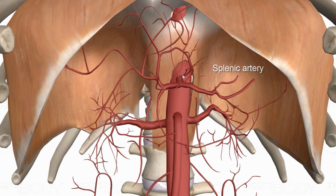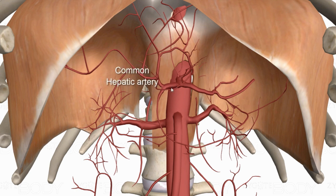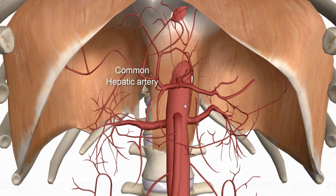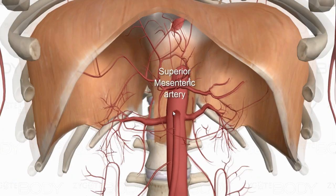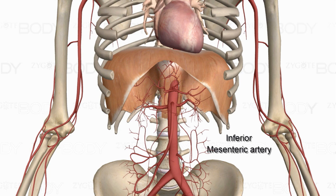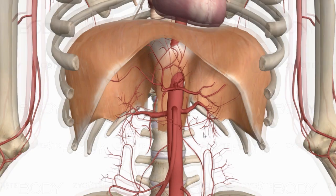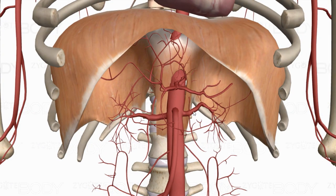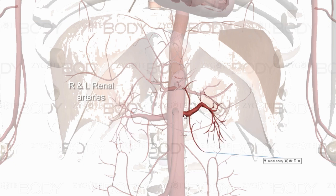A branch going up to the stomach is the left gastric artery. The branch heading over to the liver is the common hepatic artery. Moving down, the superior mesenteric artery supplies the right side of the intestines, while the inferior mesenteric artery feeds the left side of the intestines. Just underneath the superior mesenteric artery we have the right and left renal arteries.